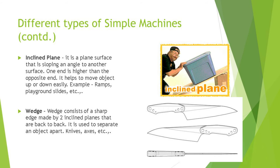An inclined plane is a flat surface that is sloping at an angle to another surface — one end is higher than the opposite end. It helps to move objects up or down easily. Examples include ramps and playground slides. You must have seen slides in the playground — it is a sloping surface, and when sliding down from the top you come down gently, making work easier.